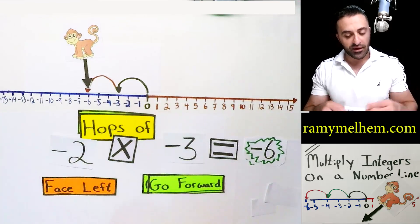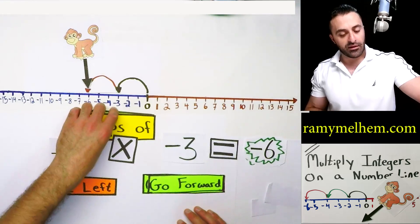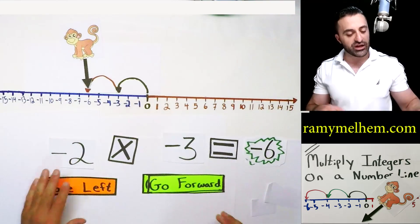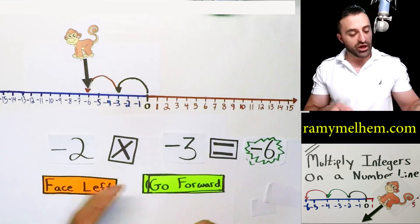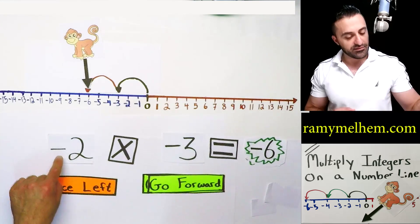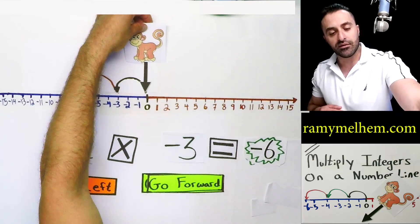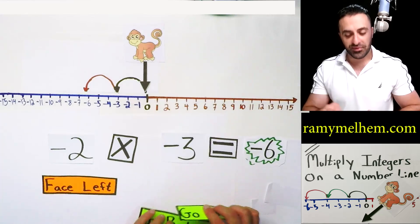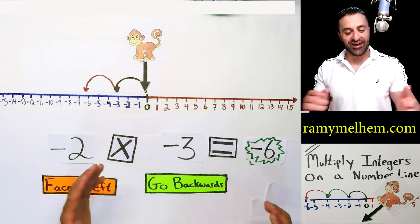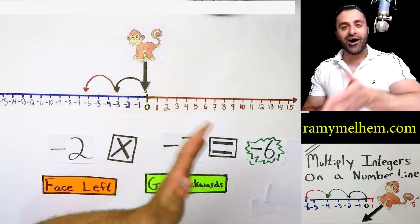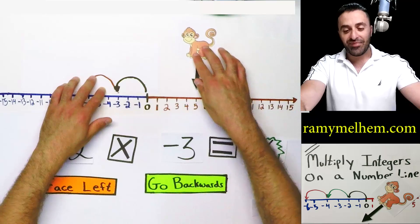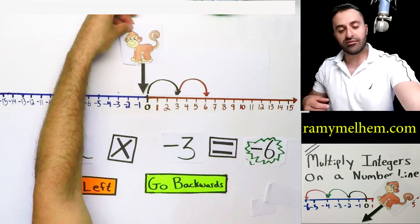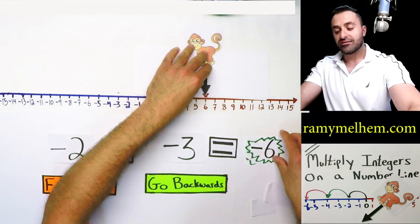How about if they're both negatives? How does that affect things? It's still two hops of three — that doesn't change. But look at the symbols now. Which way does he face? Left. Let's put him facing left. Which way does he jump? Has to hop backwards. He's facing left and he's got to hop backwards. Look what side he's going on now — he's going this way, hopping backwards, and gets to positive six again. See how this stuff works?